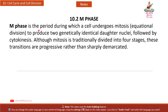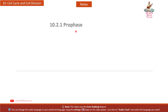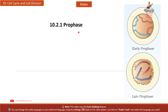10.2 M Phase: M phase is the period during which a cell undergoes mitosis — equational division — to produce two genetically identical daughter nuclei, followed by cytokinesis. Although mitosis is traditionally divided into 4 stages, these transitions are progressive rather than sharply demarcated.